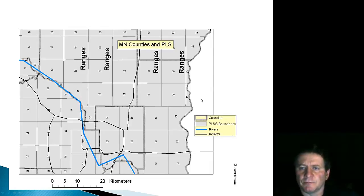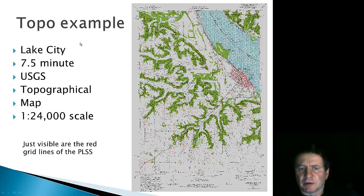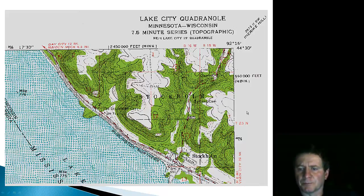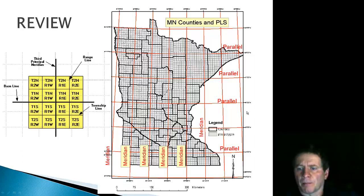A couple of examples from Minnesota: topographically, some of the PLSS grids are just faintly discernible on these maps, though here you can see the 6-mile by 6-mile grid more clearly, with the reference to its location showing range 15, range 16, township 23 north, and so on. Over the course of Minnesota, these are the standard meridians and these are the baselines for the parallels, with the grid associated with that.